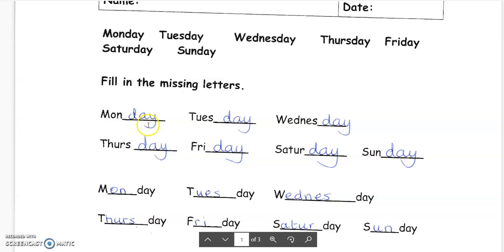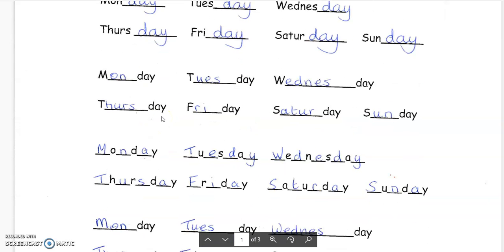Missing letters here, d a y. Here we're spelling Monday: m o n d a y. Tuesday: t u e s. Wednesday: e d n e s. Thursday: h u r s. Friday: r i. Saturday: a t u r. And Sunday: u n.